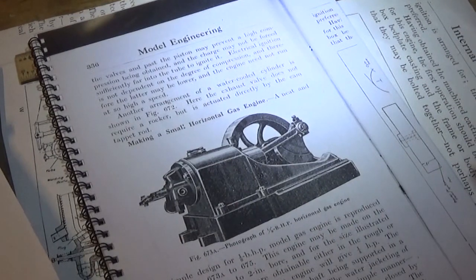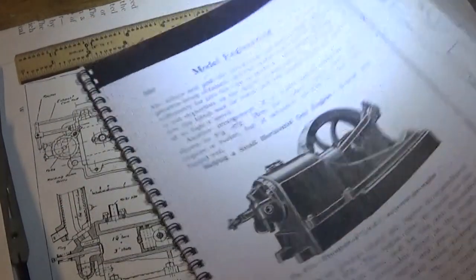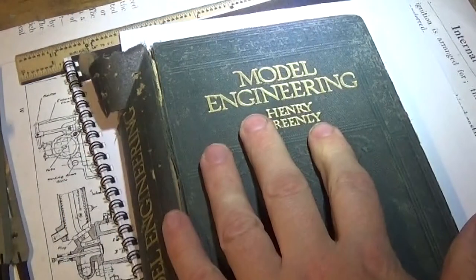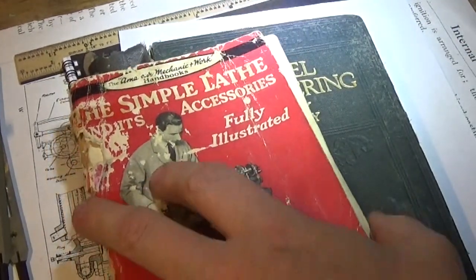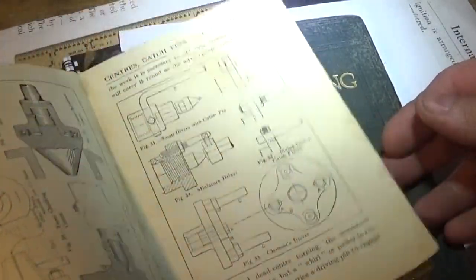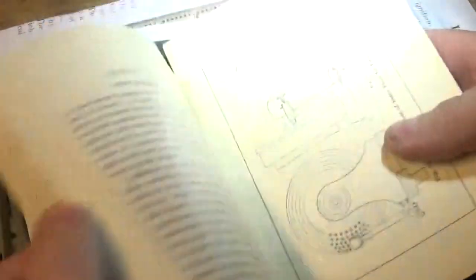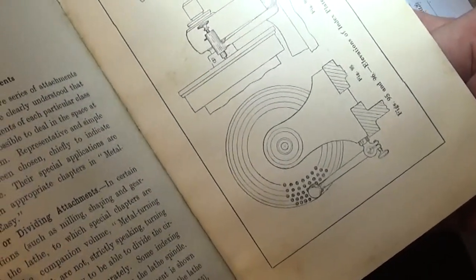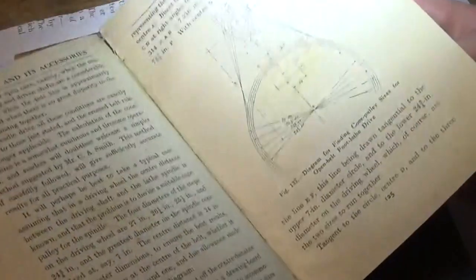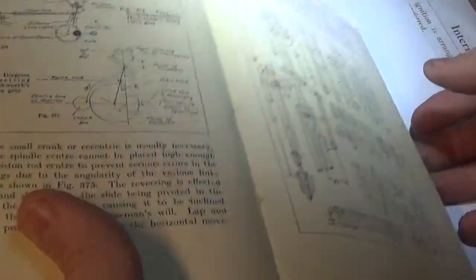Nine times out of ten when you're building a model, you've got a book - whether it's this book or something like this. These books have all got really cool sketches and drawings in them, and some have got measurements. But there's not really enough information to make things.